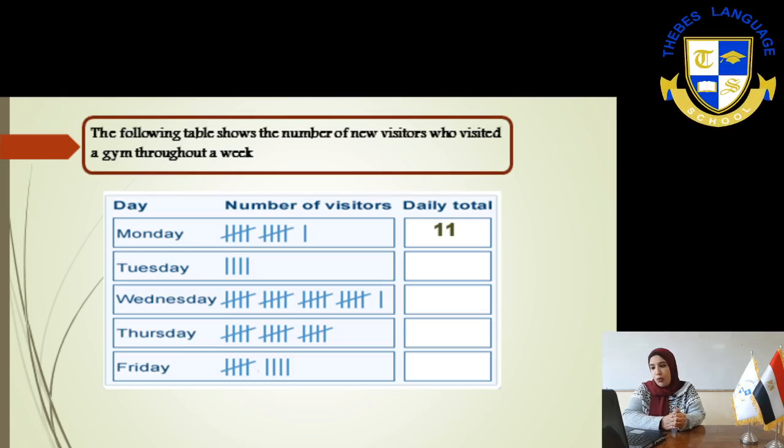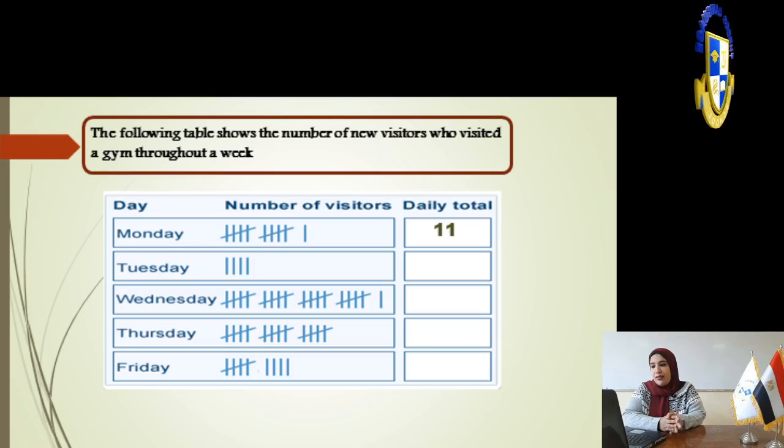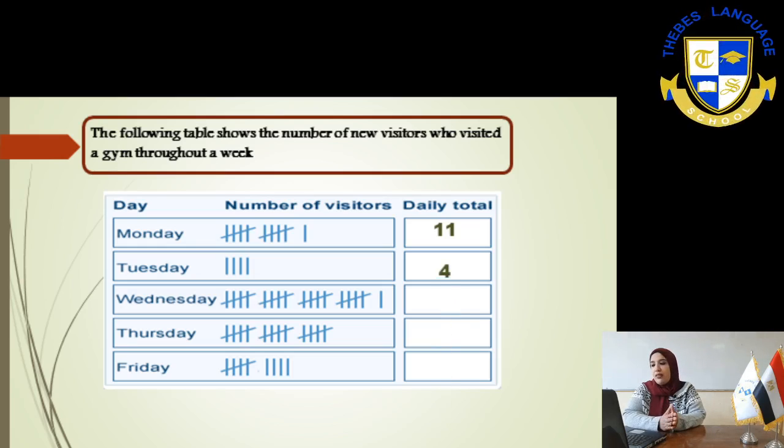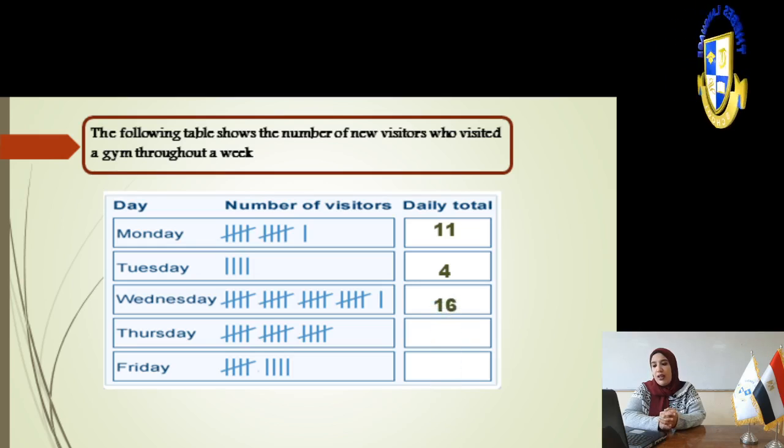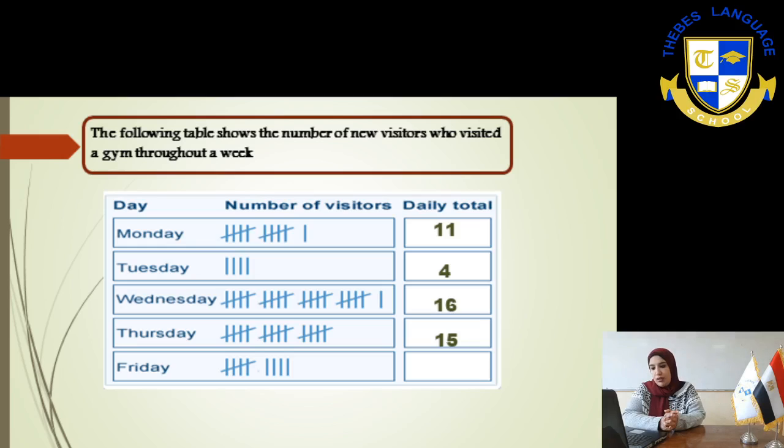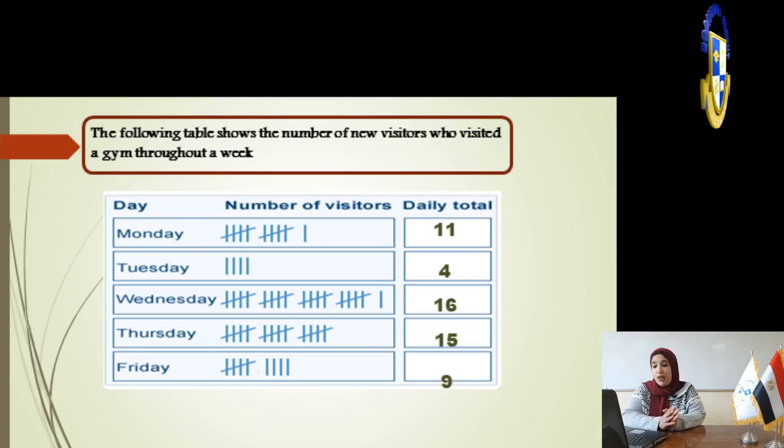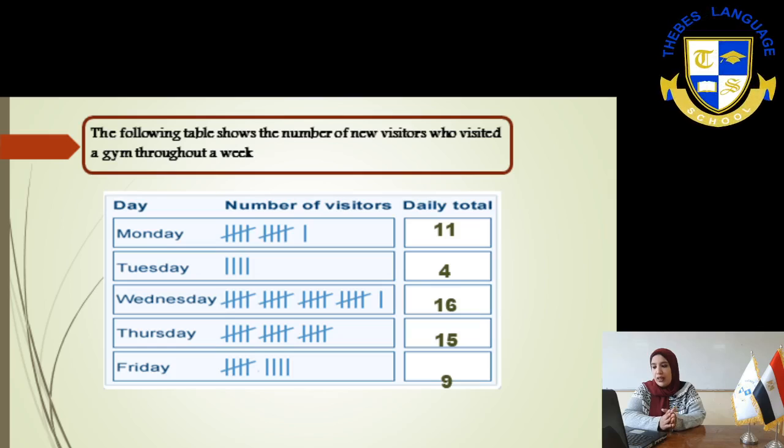On Tuesday you have 4 new visitors. Wednesday, calculate the tally mark, it will be 21. On Thursday you have 15 and on Friday you have 9 new visitors. This method is called tally mark or tally frequency table.